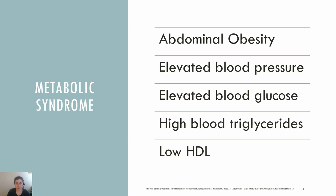What I previously discussed with glucose regulation is in the absence of diabetes. Metabolic syndrome is a group of conditions that can increase your risk of health problems like coronary heart disease, diabetes, and stroke. An individual must have at least three risk factors, which include: abdominal obesity (waist circumference greater than 35 inches for women or 40 inches for men), elevated blood pressure (over 130 systolic and 80 diastolic), elevated blood glucose, elevated triglycerides (above 150 mg per deciliter), and a low HDL.